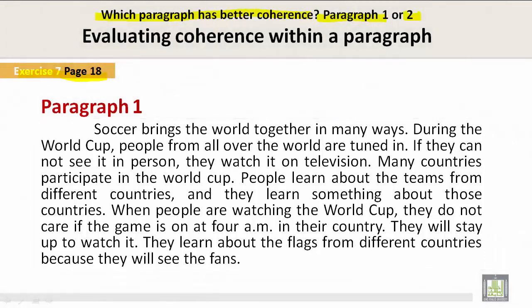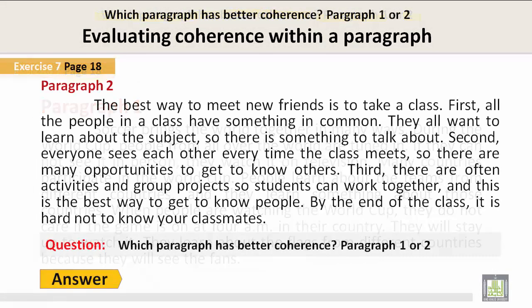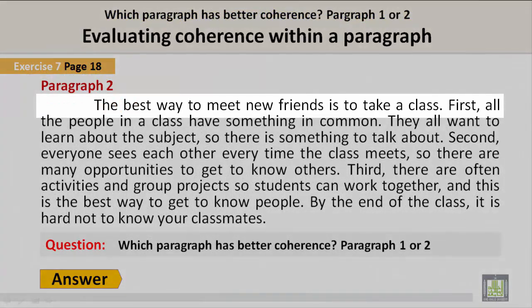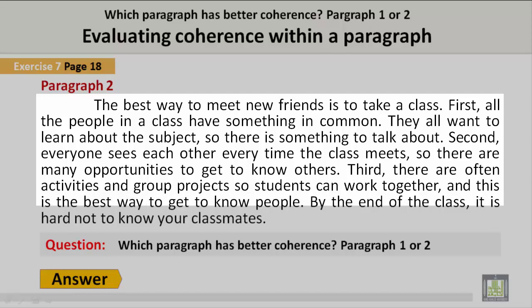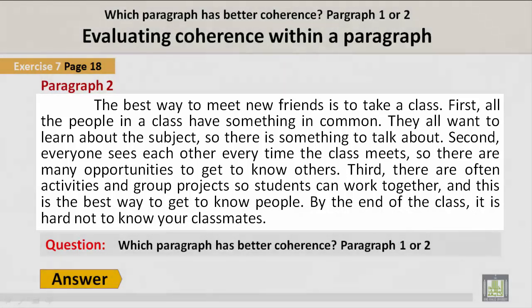Now, let's take a look at Paragraph 2. I'll read it for you. The best way to meet new friends is to take a class. First, all the people in a class have something in common — they all want to learn about the subject, so there is something to talk about. Second, everyone sees each other every time the class meets, so there are many opportunities to get to know others. Third, there are often activities and group projects so students can work together, and this is the best way to get to know people. By the end of the class, it is hard not to know your classmates.